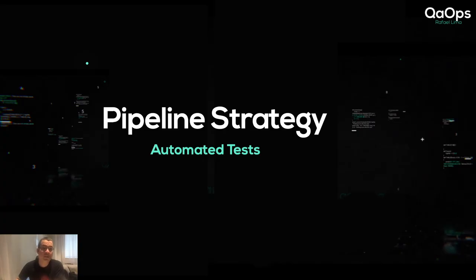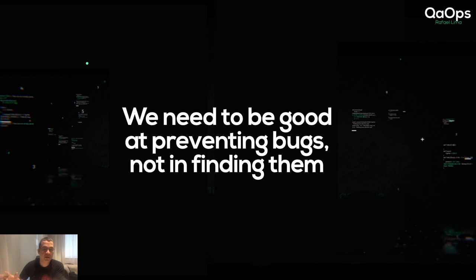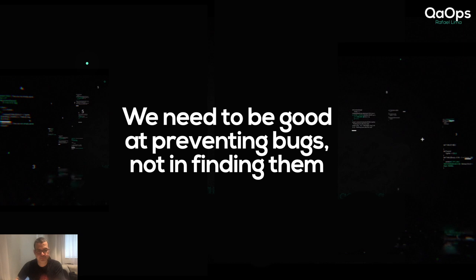We'll be talking about the pipeline strategy for your automated tests, so you can do a mix of a manual strategy with your automated strategy. The pipeline is going to be mainly focused on your automated tests. The first thing I'd like to say is we need to be good at preventing bugs, not finding them, because when you find a bug it means it's already in production, already too far from the development process and already found by the user.